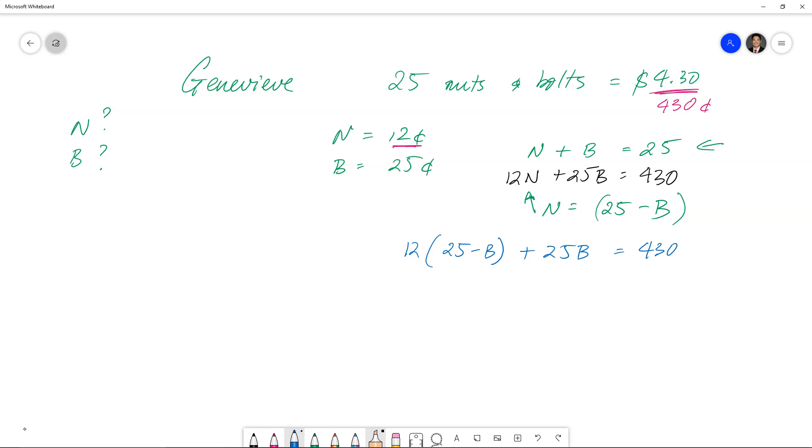I'm just going to get my calculator out here and expand the brackets. So 12 times 25 is 300. So we've got 300 minus 12B plus 25B is equal to 430. And we can rearrange everything. So 25 minus 12 is 13B. And then if we take 300 from both sides, we get 130.